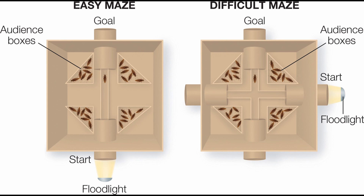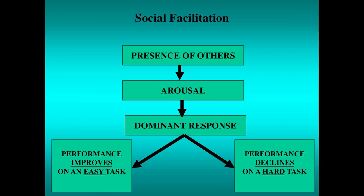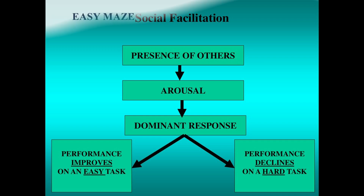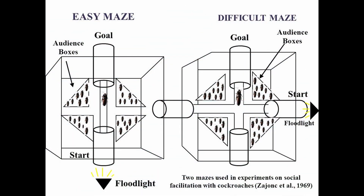Zajonc found that the presence of members of the same species — whether as co-actors participating in the race or as audience observers — increased running speed in the easy maze but decreased it in the difficult maze relative to the alone condition. These findings were interpreted as support for the drive hypothesis of social facilitation: that the presence of an audience, whether cockroaches or human beings, increases general arousal, which facilitates dominant responses and impairs non-dominant responses.